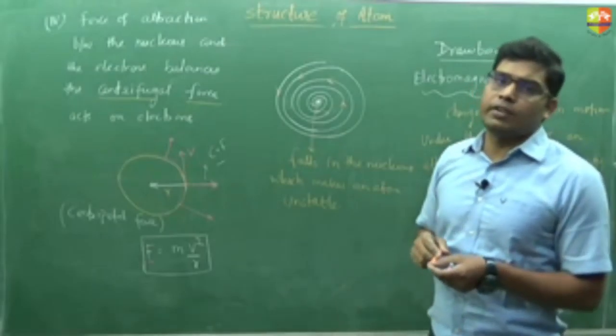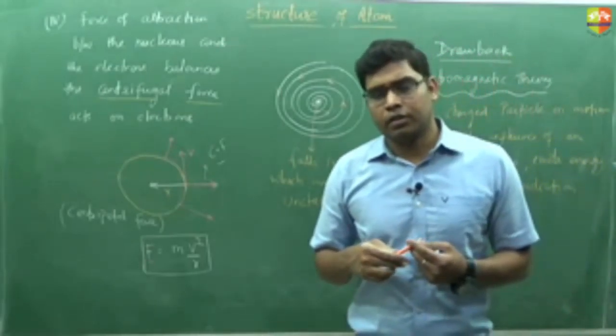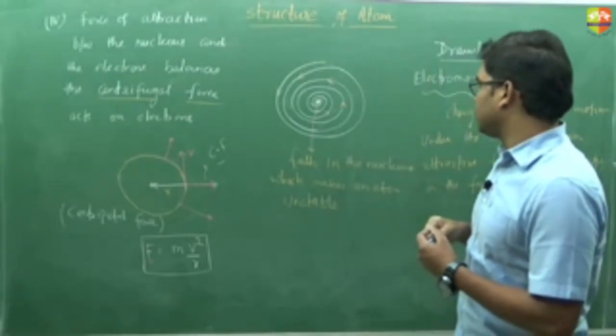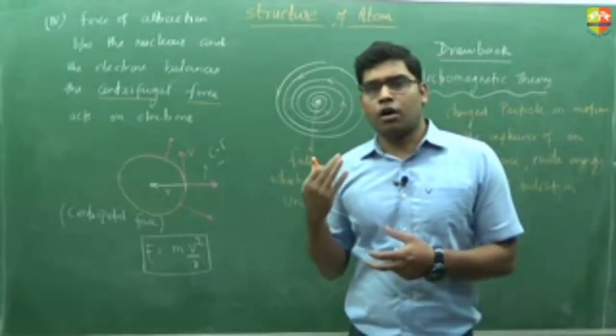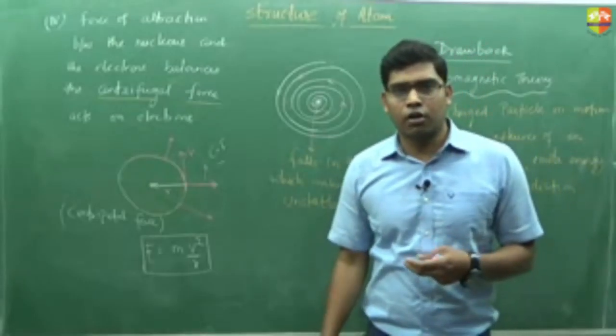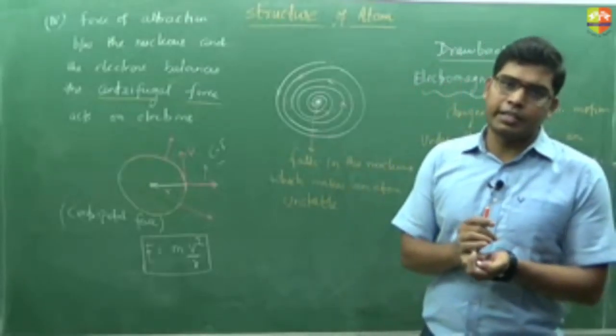Also, another thing: Rutherford model did not talk about the orientation of electron, the velocity of electron, the energy of the electron. There were no information about all these for this electron.